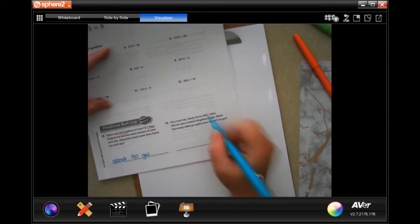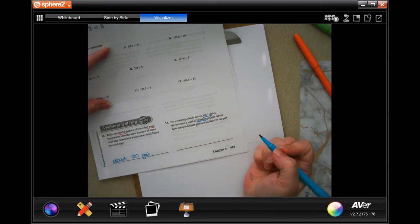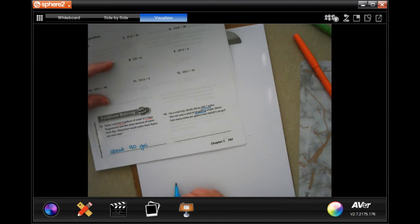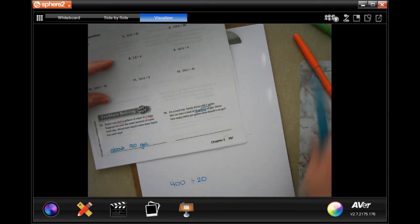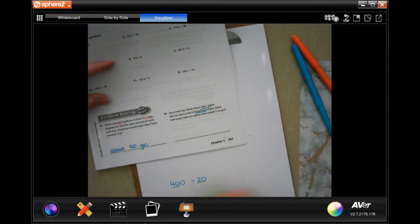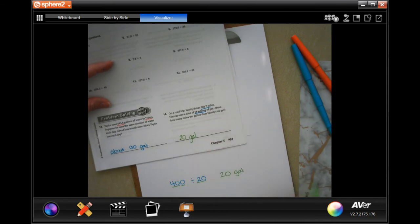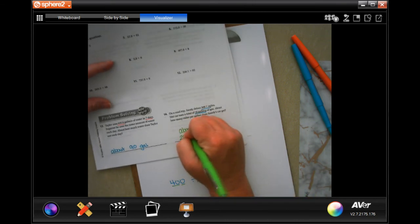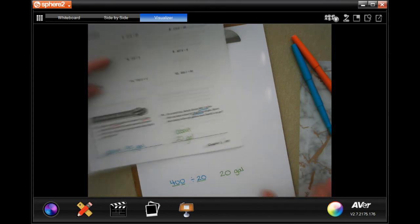On a road trip Sandy drives 368.7 miles per car, uses a total of 18 gallons of gas. I would put probably 400 miles and 20 gallons of gas. So 20 goes into 40 twice, and then I would add that zero on - 20 gallons. That's a reasonable estimate.